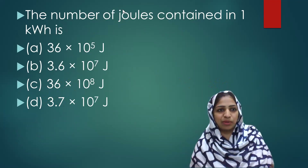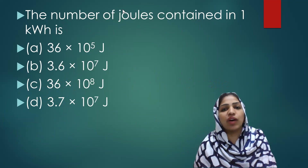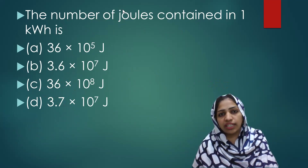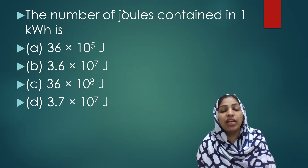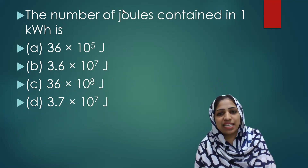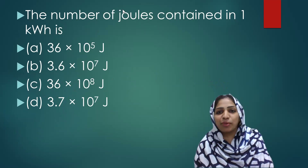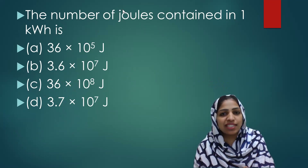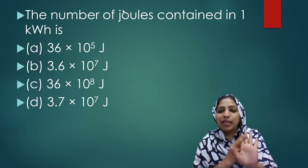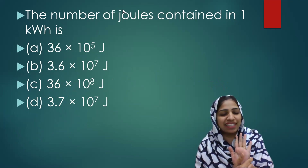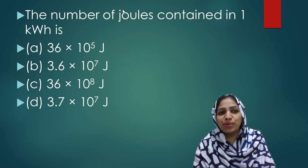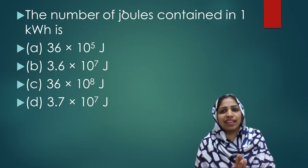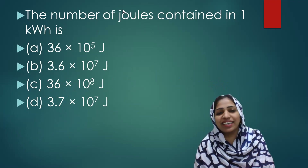We are going to talk about assertion reasoning questions. The number of Joules contained in one kilowatt hour — kilowatt hour is the commercial unit of energy. 1 kilowatt hour equals 1000 multiplied by 3600 seconds, which is 3600 into 1000. There are 2 zeros in 3600 and 3 zeros in 1000, giving 5 zeros total. So it is 36 into 10 raised to 5 Joules, that is 3.6 × 10^6 Joules.